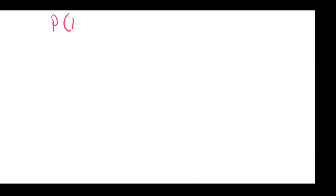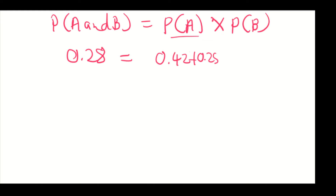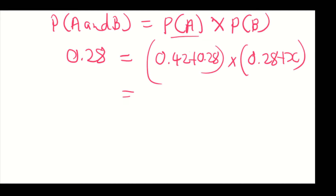Writing the independence equation: P(A and B) = P(A) × P(B), we get 0.28 equals (0.42 + 0.28) times (0.28 + X). Adding 0.42 and 0.28 gives 0.7, so it becomes 0.28 equals 0.7 multiplied by (0.28 + X).